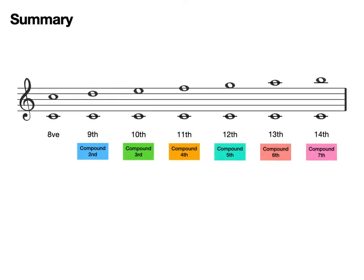So have a look at the diagram here. Our first interval was an octave. We know this one. C to C is eight notes. Now if we move that high C to a D, this then becomes a ninth. Because there are nine notes between that middle C and the D. But this can also be called a compound second.